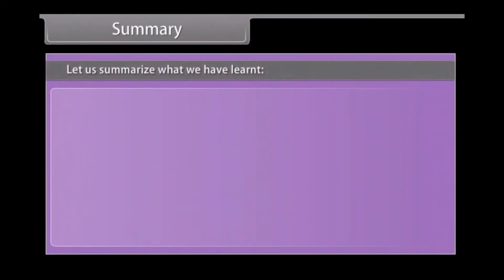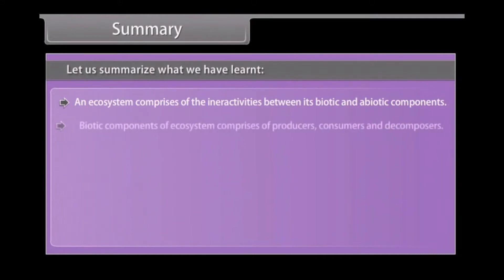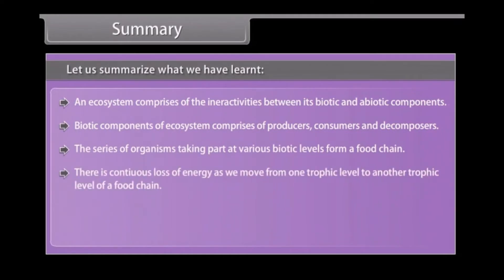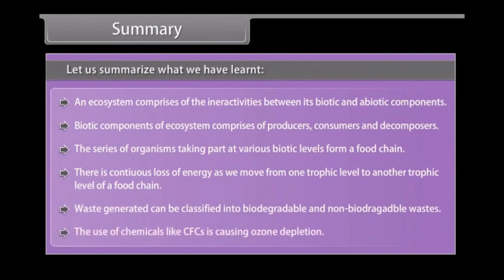Summary. Let us summarize what we have learnt. An ecosystem comprises of the interactivities between its biotic and abiotic components. Biotic components of ecosystem comprises of producers, consumers and decomposers. The series of organisms taking part at various biotic levels form a food chain. There is continuous loss of energy as we move from one trophic level to another trophic level of a food chain. Waste generated can be classified into biodegradable and non-biodegradable wastes. The use of chemicals like CFCs is causing ozone depletion.